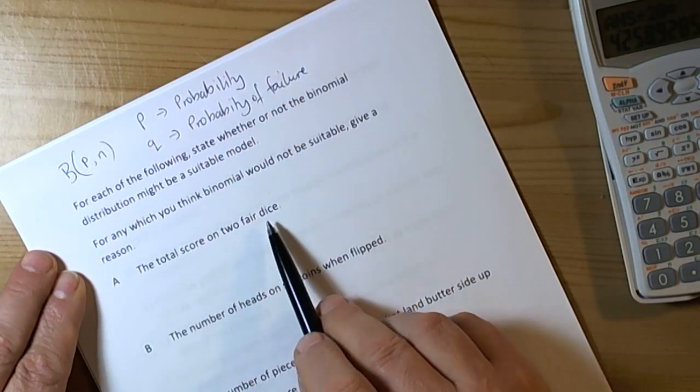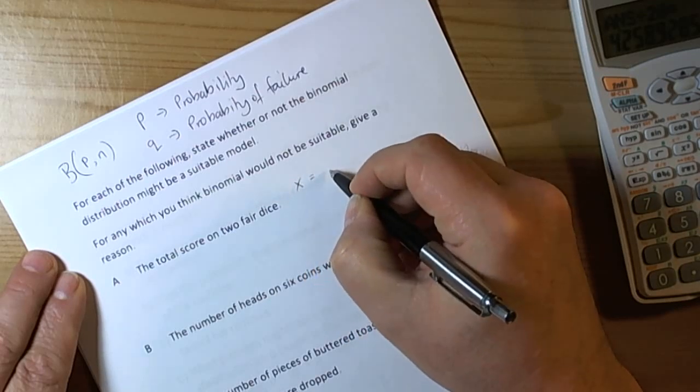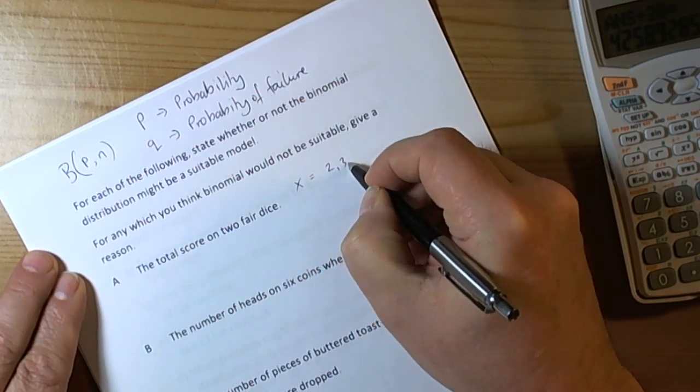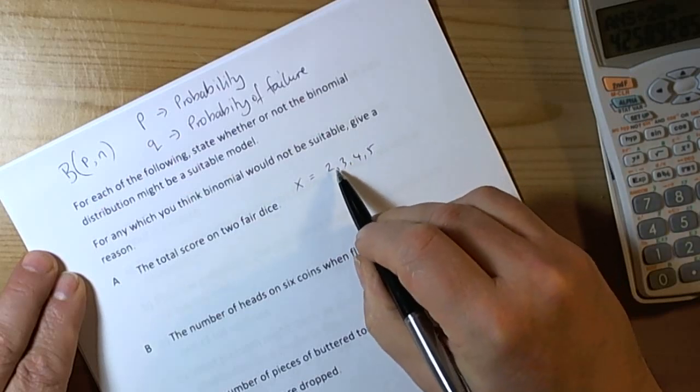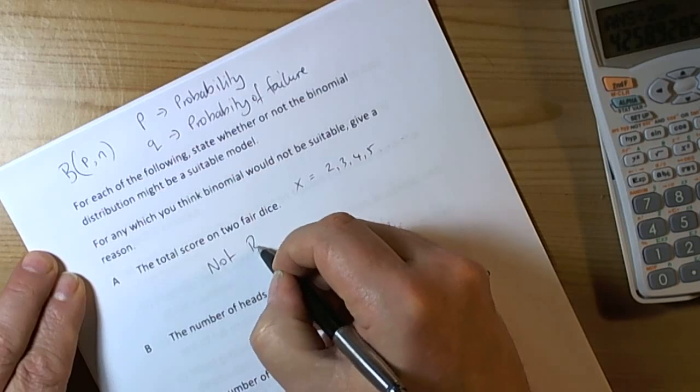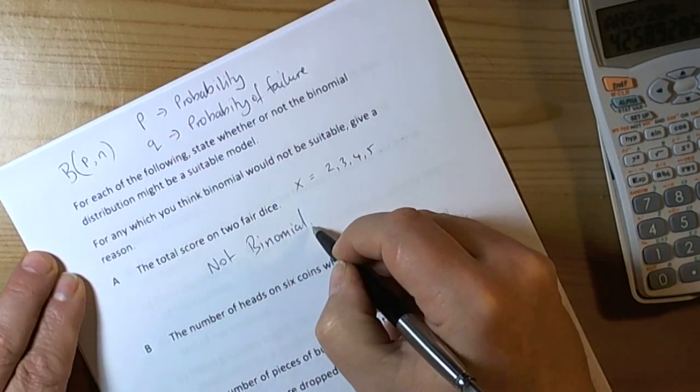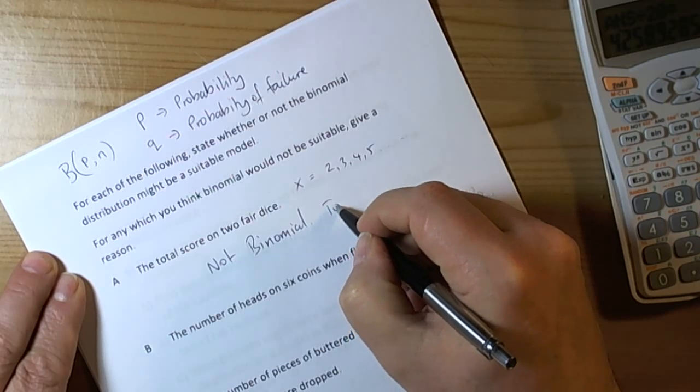Now A, the total score on two fair dice. The problem with that is the distribution of the total scores will go from 2, 3, 4, 5. So there are many outcomes, so therefore this one is not a binomial distribution straight away because the number of outcomes are not fixed at 2. It's not binomial and too many outcomes.